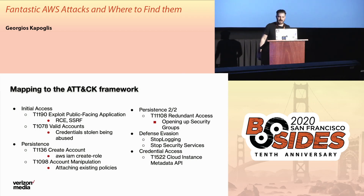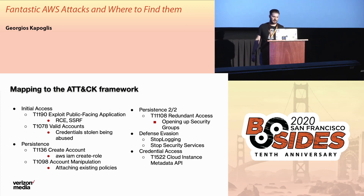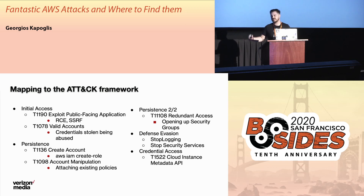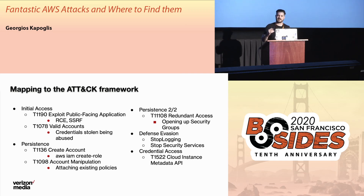Jumping right in, the code that you see — T1190 or T11136 — is essentially the reference code to the attack matrix. I'm going to go through it and give you some of the attacks that we see based on the tactic and then the specific technique, which is going to be the specific reference code.